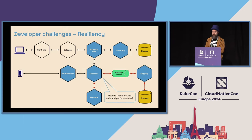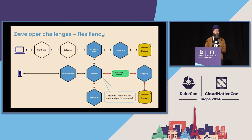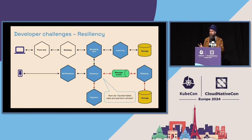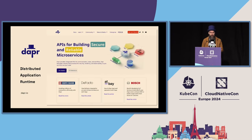And finally, how do you deal with resiliency? Because some things will always fail — maybe some services are not available temporarily, or maybe a state store is unavailable for a moment. How do you handle retries, for instance?